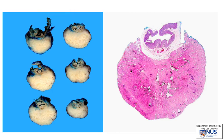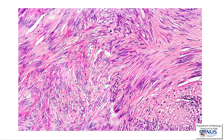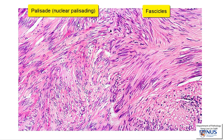The tumour looks relatively pink on low power. Being a mesenchymal tumour, it is usually composed of spindle cells — the cells are very elongated with pulled-out nuclei, and the shape of the cells is also very elongated, very long and thin. Classically, these cells are arranged in parallel bundles, which we refer to as fascicles. Sometimes you can see that the nuclei kind of line up, forming a row, and each row is known as a palisade.